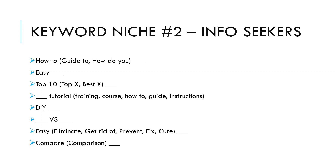Next, you can flip that first one — how to — and do keyword tutorial, keyword training, keyword course, how to, guide, instructions. So in that same vein: DIY, do it yourself, then the keyword. This is great for recipes or instructions, or how to build a table — DIY office desk. Then again, we see a repeat of the versus for info seekers: this keyword versus this keyword.